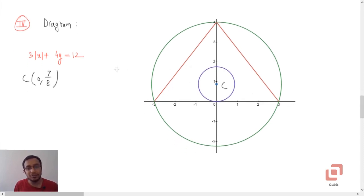Yes, so these two sides of the triangle, these are given by the equation 3 into mod x plus 4y equal to 12. The green circle that you can see, this one, this is the circum circle of the triangle. And its center can be very easily located now, it is here, 0, 7 by 8.